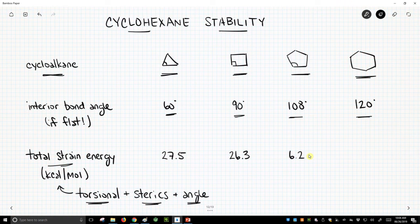Now when we go to cyclohexane, you would expect this number to go back up because these interior angles get now too big. So there's a new type of strain. It's an overly extended angle. But as it turns out, it's not. Cyclohexanes have no strain energy.